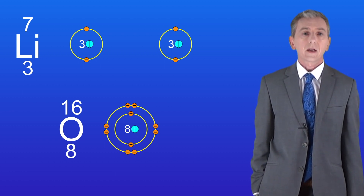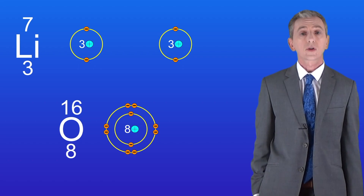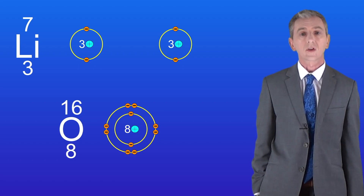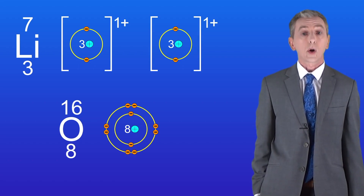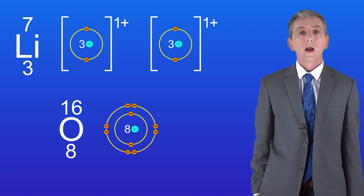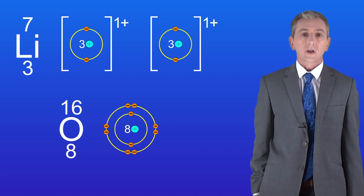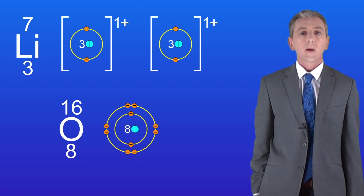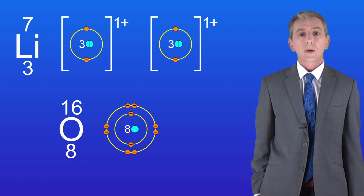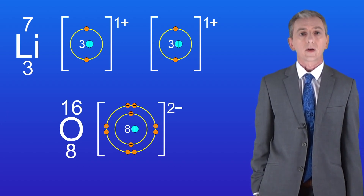At the end of this reaction each lithium atom has got three positive protons in its nucleus but only two negative electrons, so these are now positive one ions. The oxygen atom has got eight positive protons in its nucleus but it now has ten negative electrons, so it's now a negative two ion.